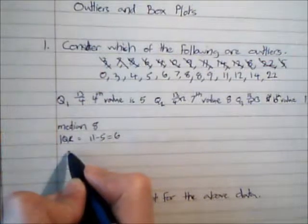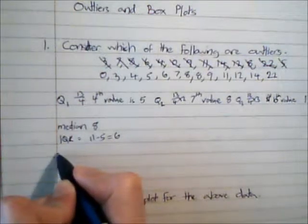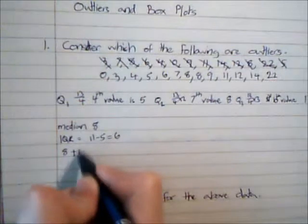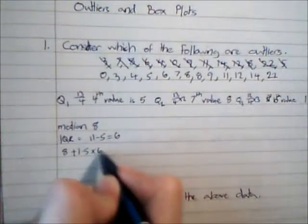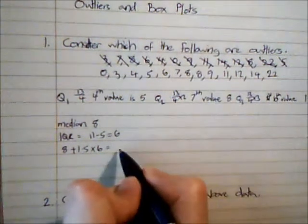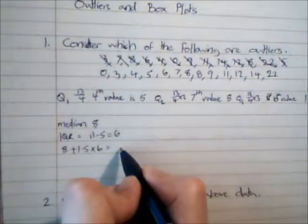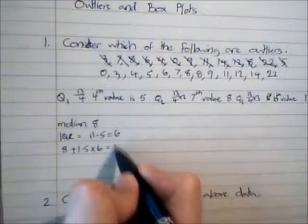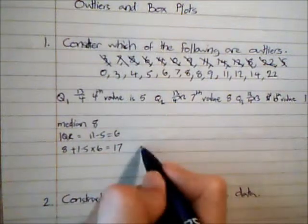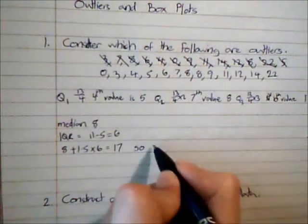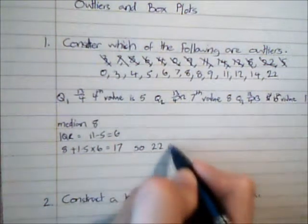The upper bound is going to be the median plus 1.5 times the interquartile range, so 8 plus 1.5 times 6, which gives me 17. There's one value greater than that, which is 22, so 22 is an outlier.